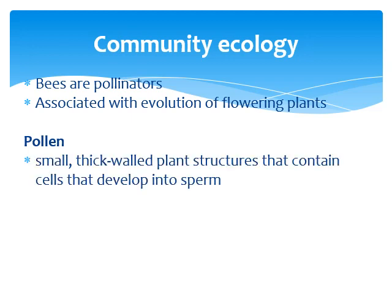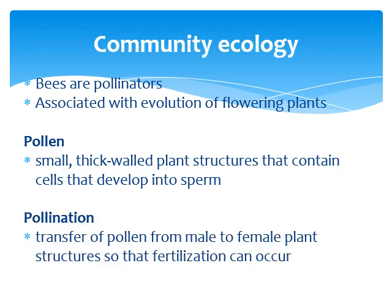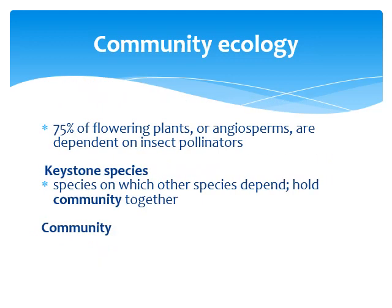Pollen is a small, thick-walled plant structure that contains cells that develop into sperm. The process of pollination is simply transferring pollen from male to female plant structures so that fertilization can occur. About 75% of flowering plants — our angiosperms — are dependent on insect pollinators, meaning they can't self-pollinate or pollinate semi-randomly by wind; they must be pollinated by some sort of insect.